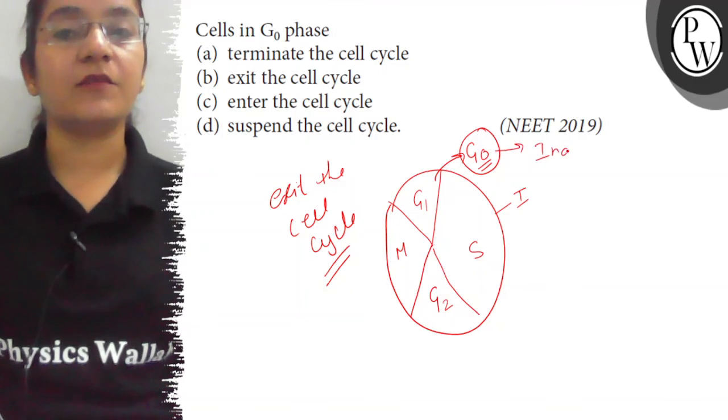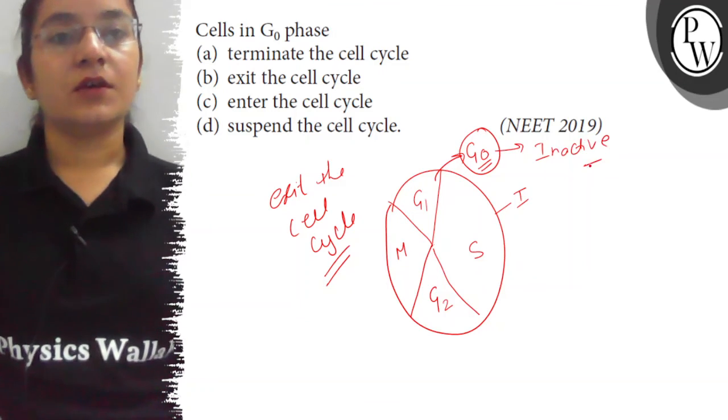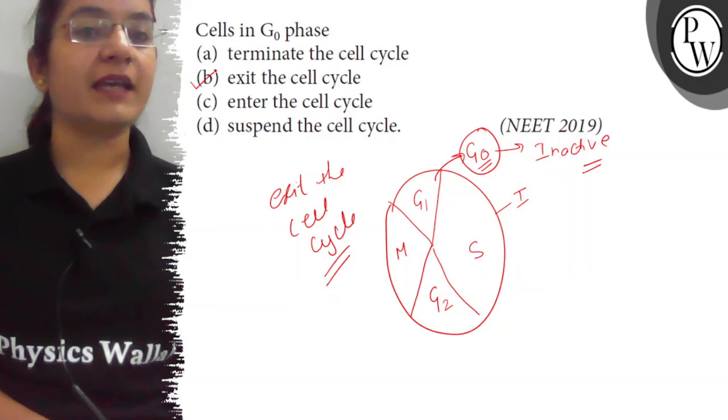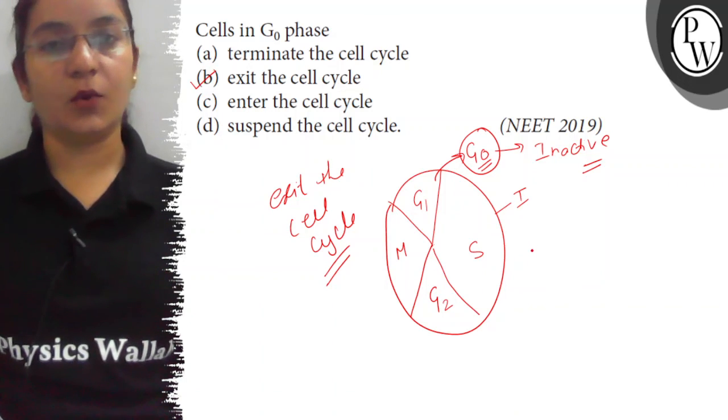and inactive phase. So the correct answer here is option B: exit the cell cycle. Thank you.